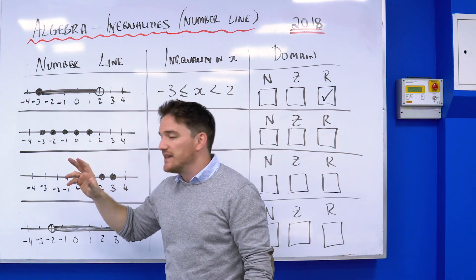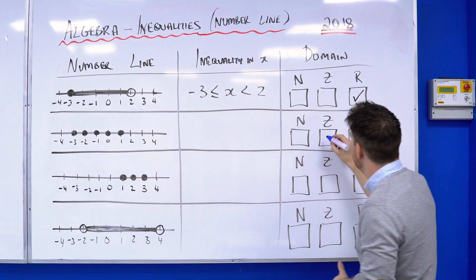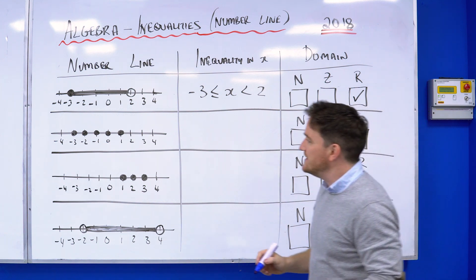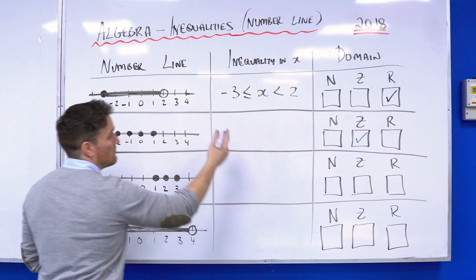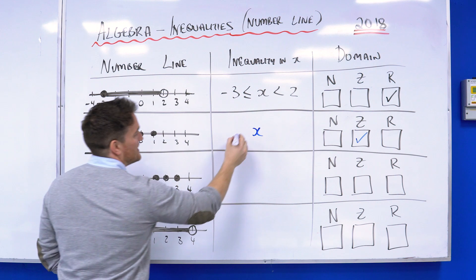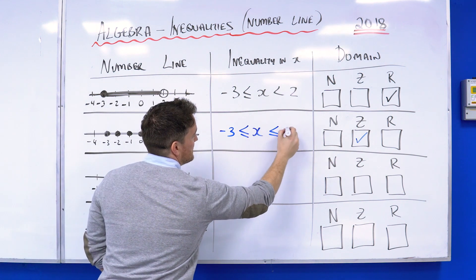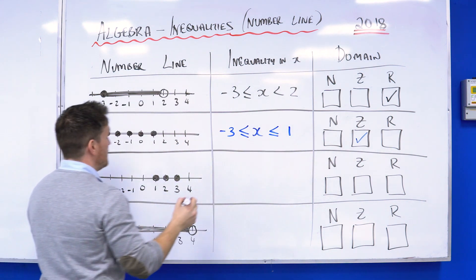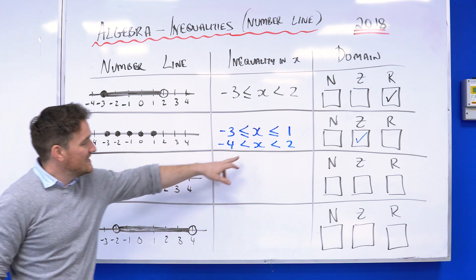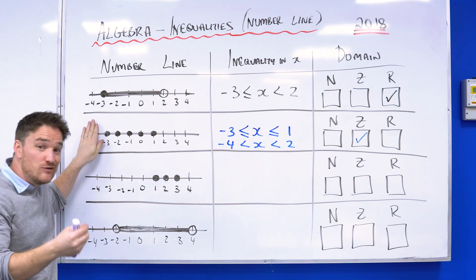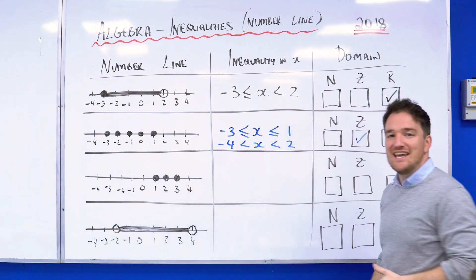The second one has dots only, so it must be natural or integer. But it has minus numbers, so straight away I know this is an integer problem. The easiest thing is to make a sandwich with x in the middle: x is greater than or equal to minus three — including it — and goes up to one. It would also not be wrong to say x is greater than minus four and less than two — either would get you the correct answer.